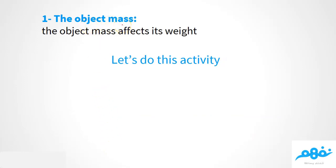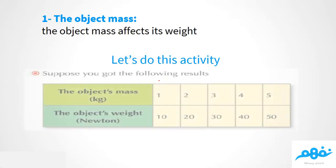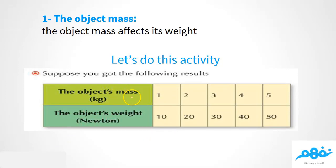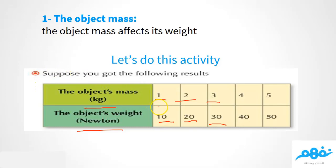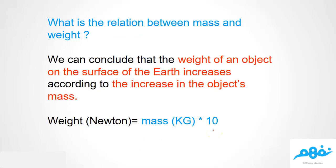How does the object's mass affect its weight? Let's do an activity. Look at this table: if the object mass is 1 kilogram, the weight is 10 Newtons. If the mass is 2, the weight is 20. If the mass is 3, the weight is 30, and so on. As you can see, we multiply the mass by 10 each time: 1×10=10, 2×10=20, 3×10=30. So the relationship is: weight equals mass (in kilograms) times 10.